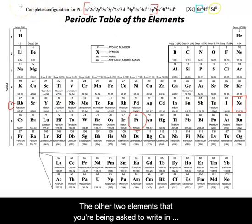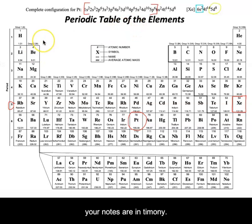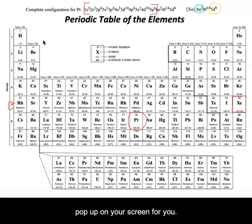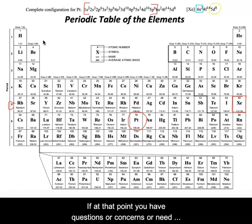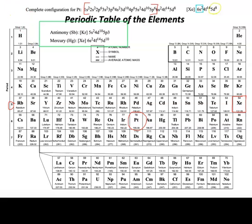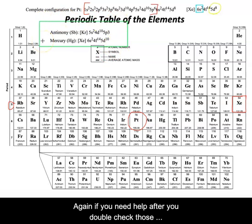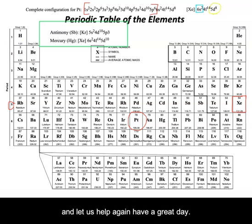The other two elements you're being asked to write in your notes are antimony and mercury. I would pause right now, try to do those, and when you're ready, hit play and the answers will pop up on your screen. If you have questions or concerns or need help, please find your closest chemistry teacher and let us know. Hopefully you paused and tried to work out those two examples. Your answers are here in the green box. If you need help after you double-check those, please go find your closest chem teacher and let us help. Have a great day!